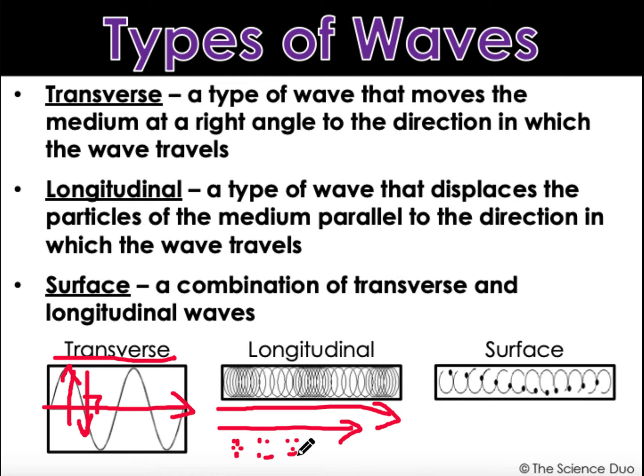A surface wave is a combination of both. These particles are moving both up and down as they travel this way.